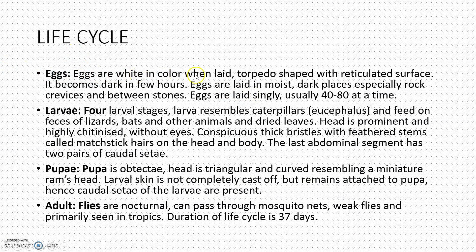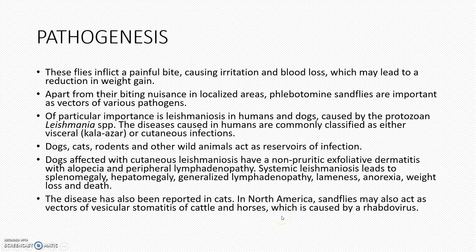The eggs are white in color when laid, torpedo-shaped with a reticulated surface. The larvae have 4 larval stages and resemble a caterpillar. The pupa is an obtect pupa — very important. Adult flies are nocturnal, and the duration of the life cycle is 37 days.